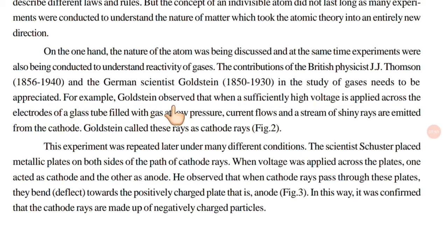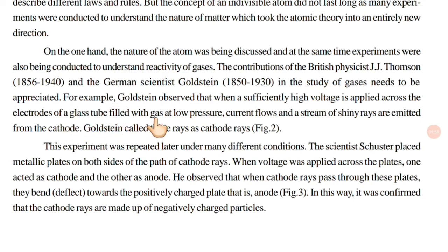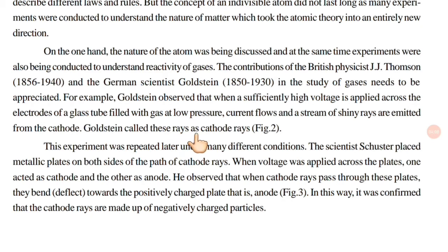For example, Goldstein observed that when a sufficiently high voltage is applied across the electrodes of a glass tube filled with gas at lower pressure, current flows and a stream of shiny rays are emitted from the cathode. Goldstein called these rays cathode rays.